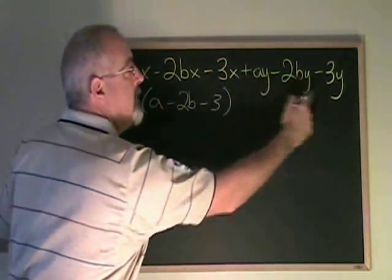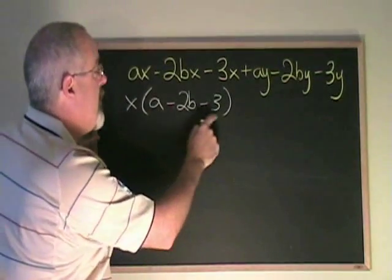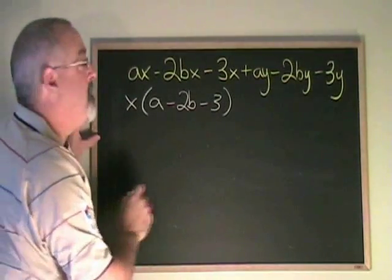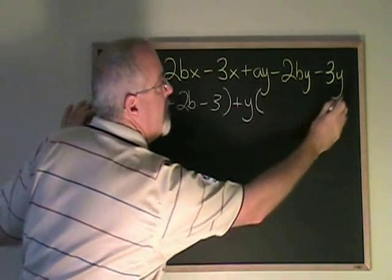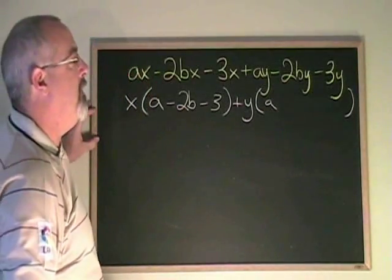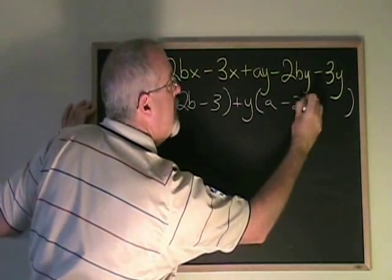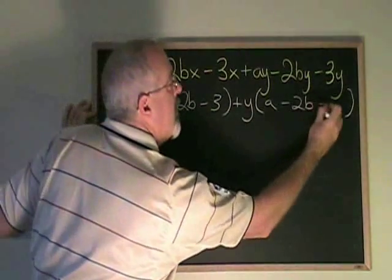Now, what can I factor out of the second group of three that would result in a bracket that has the same terms in it? It will be positive y. Ay divided by y is a minus 2b, minus 3y divided by y is minus 3.